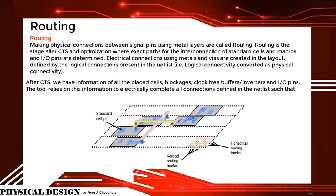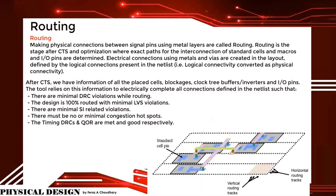After CTS, we have information of all the placed cells, blockages, clock tree buffers, inverters, and IO pins. The tool relies on this information to electrically complete all connections defined in the netlist such that there are minimal DRC violations while routing. The design is 100% routed with minimal LVS violations, minimal SI-related violations, no or minimal congestion hotspots, and timing DRCs and quality of reports are met and booked respectively.